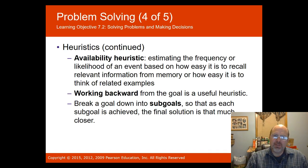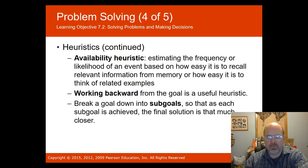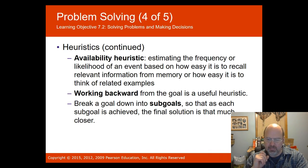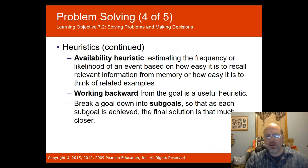The availability heuristic is estimating the frequency or likelihood of an event based on how easy it is to recall relevant information from memory. For instance, in a study where they asked people whether the letter K is used more frequently as a first or third letter of a word, most people said the first — but actually it's the third. We tend to form patterns in our brain based on our experiences.